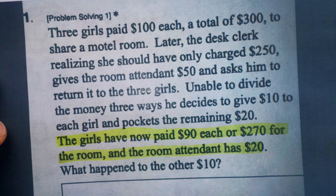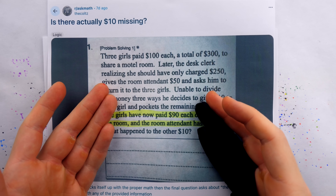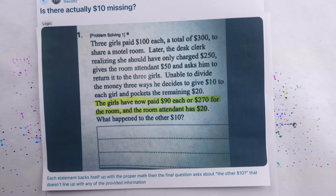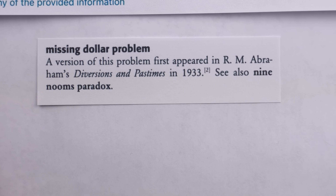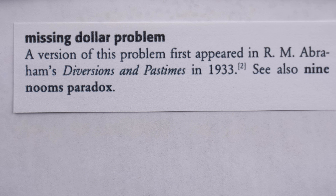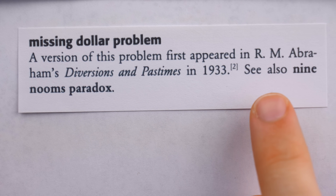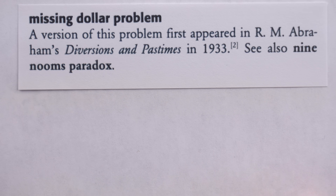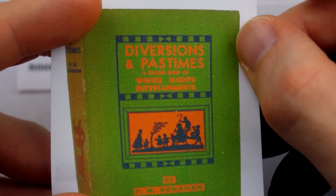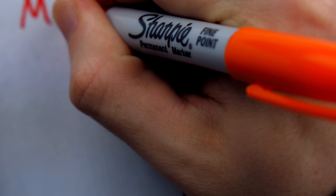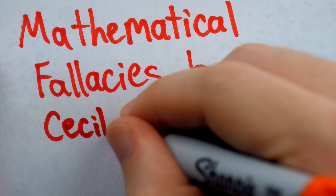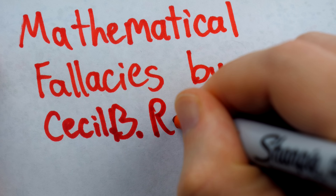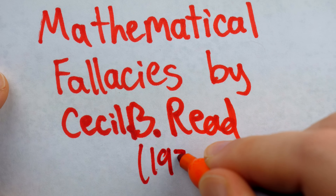Like I said, this riddle is a bit of a classic, and there's a great chance you've seen it before, or one of its variations. The Universal Book of Mathematics by David Darling says in the Missing Dollar Problem entry, the diversion of this puzzle appeared in R.M. Abraham's Diversions and Pastimes, released in 1933. Another source cited as having a missing dollar puzzle is the book Mathematical Fallacies, by a fella named Cecil B. Reed, published also in 1933.